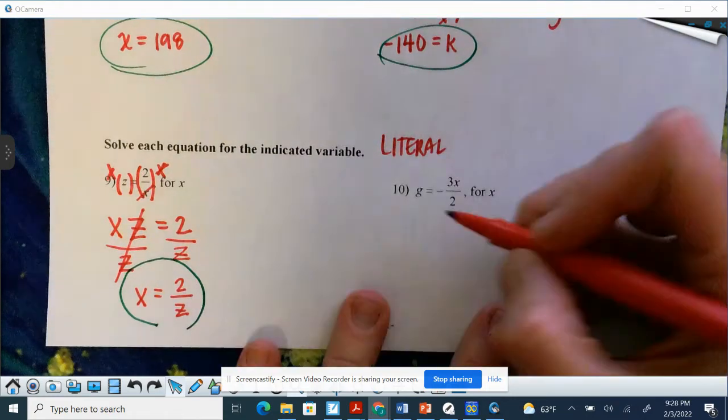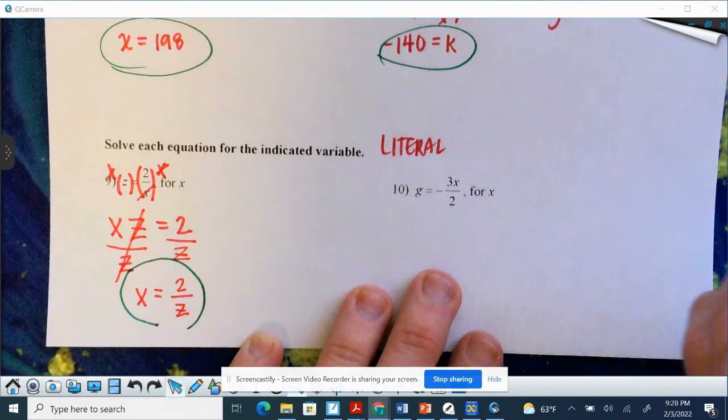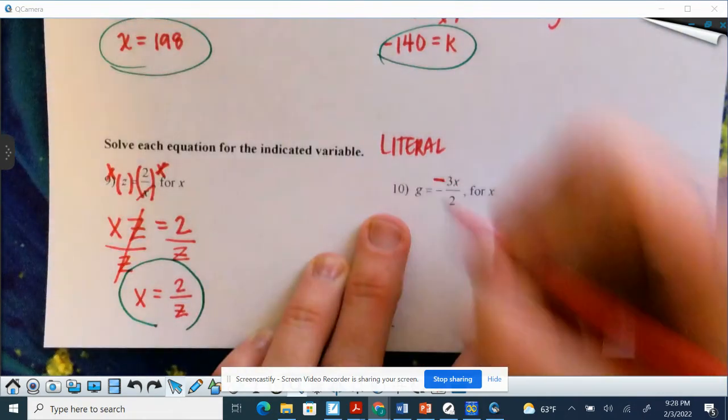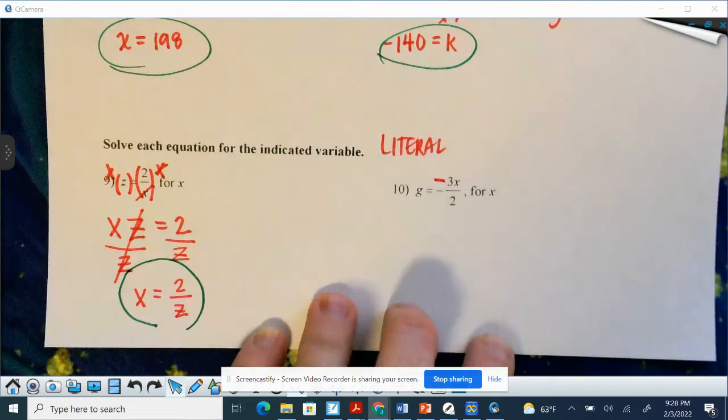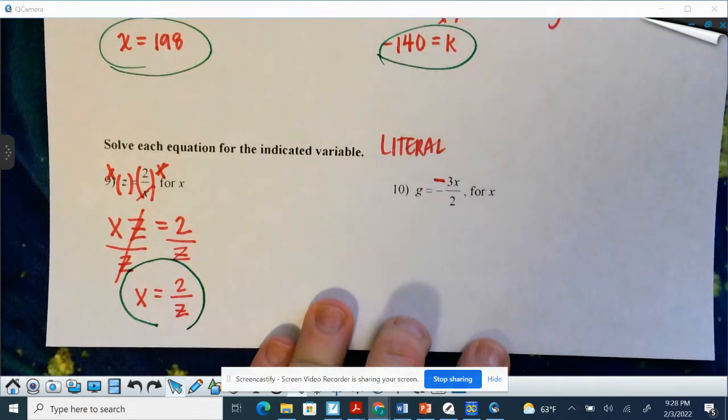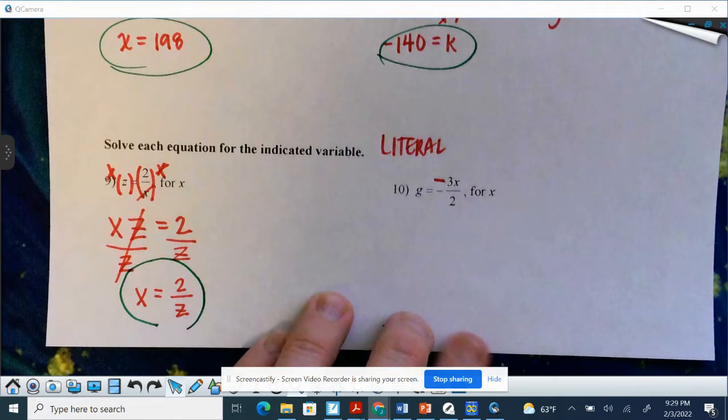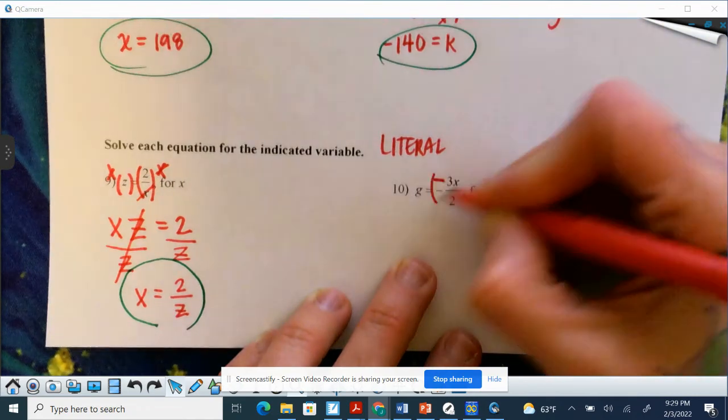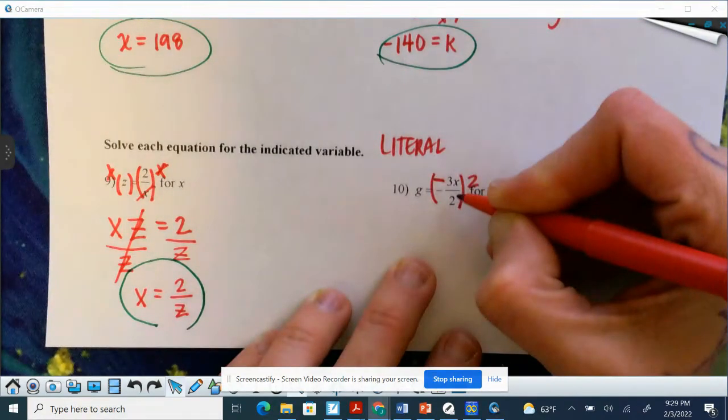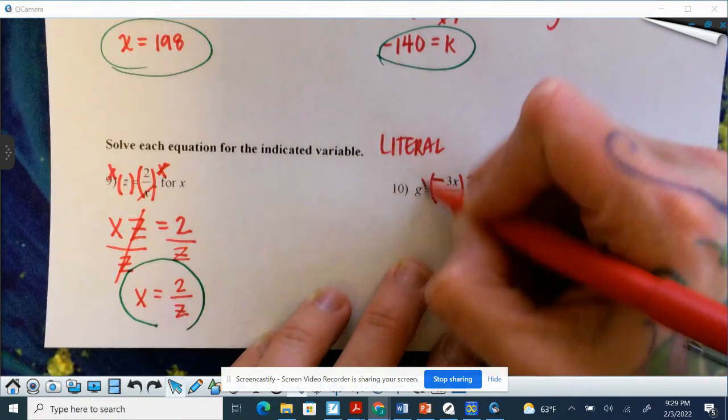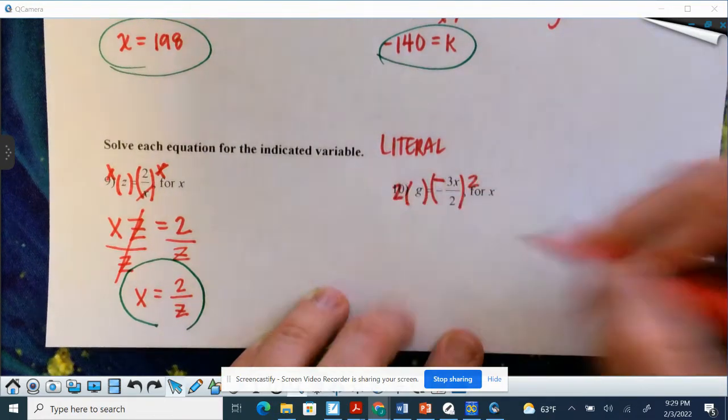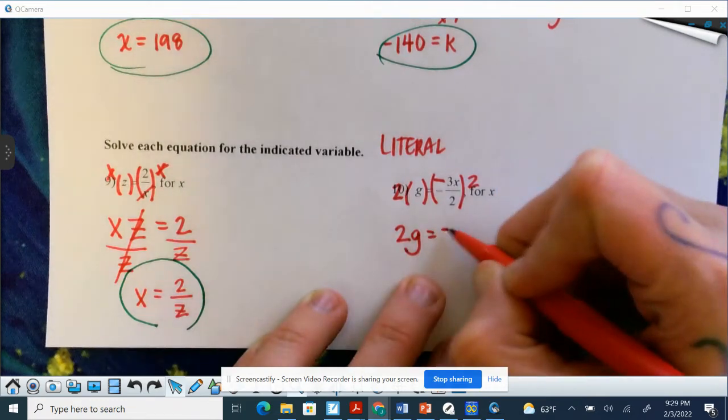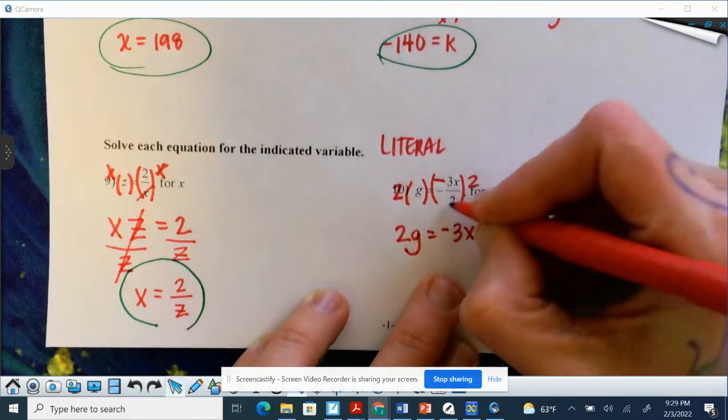So this one, that negative, you just have to decide where to apply it. I'm going to put it with the 3 and then ignore it down there. So we want x by itself. We have a 2 in the denominator, we got to get rid of that. So we're going to multiply both sides by 2 because that's negative 3x divided by 2, and the opposite of division is multiplication. So we're going to multiply this side by 2 as well. So I'm going to have 2g equals a negative 3x.